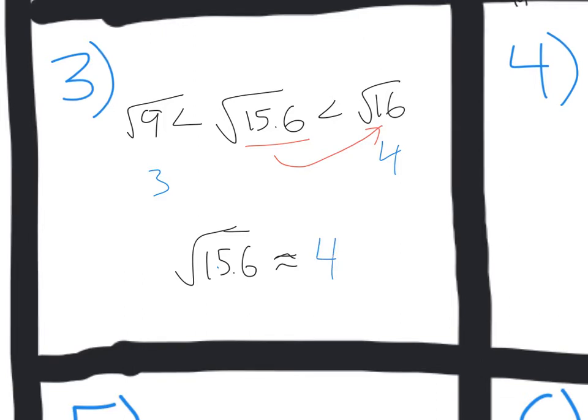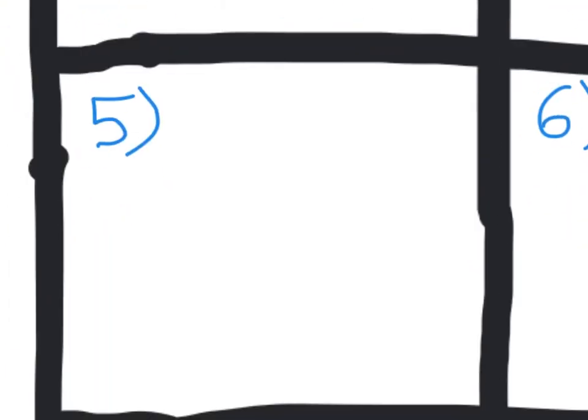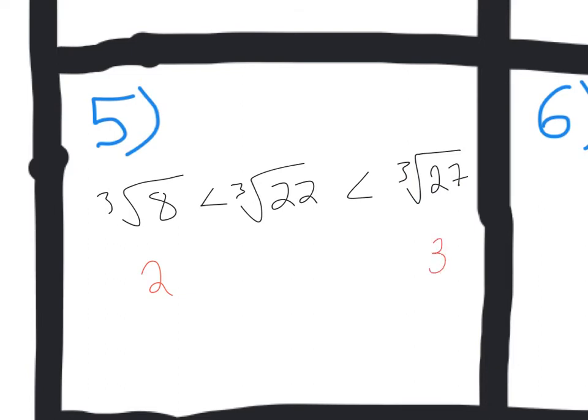Alrighty, next one, let's go to number 5. Cube root of 22. Okay, well, that's between the cube root of 27 and the cube root of 8. From our notes, we know that the cube root of 8 is just equal to 2, and we know that the cube root of 27 is equal to... And that was Teddy just saying hi.